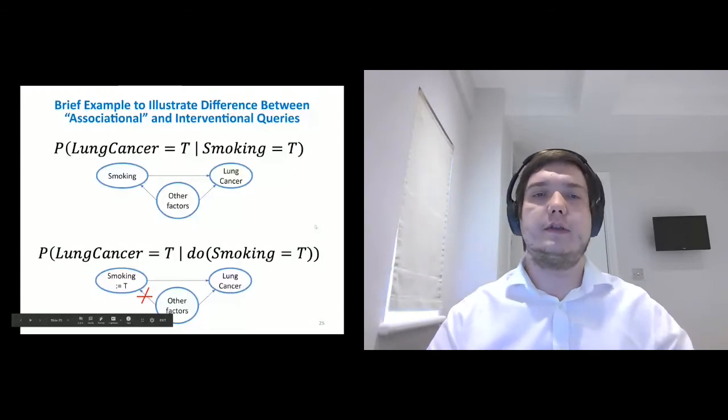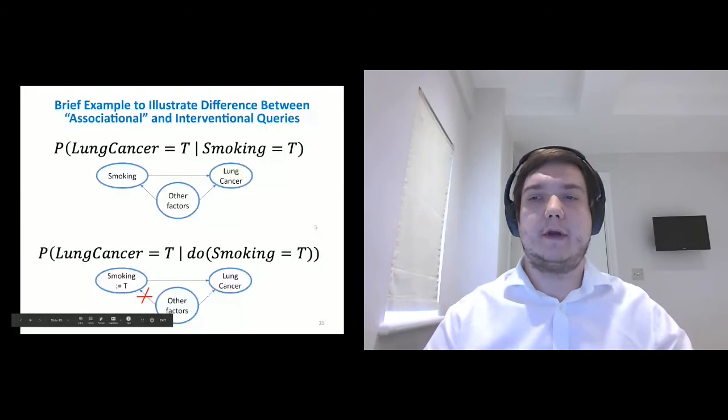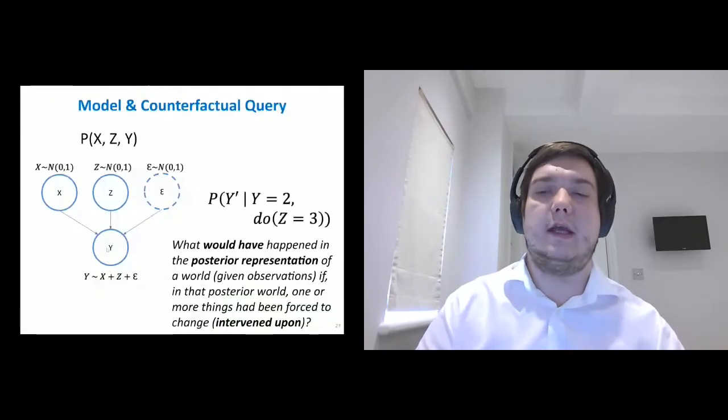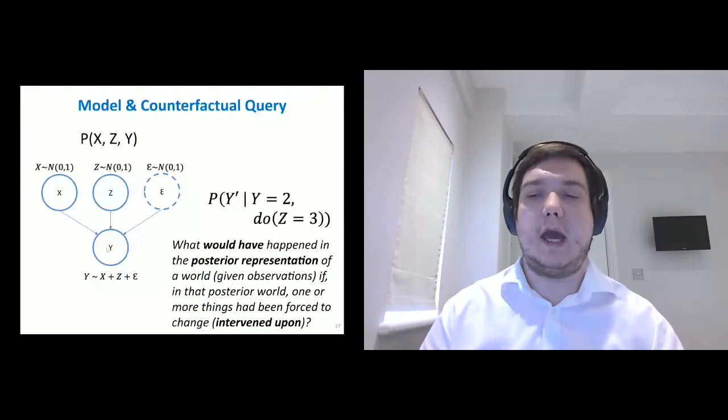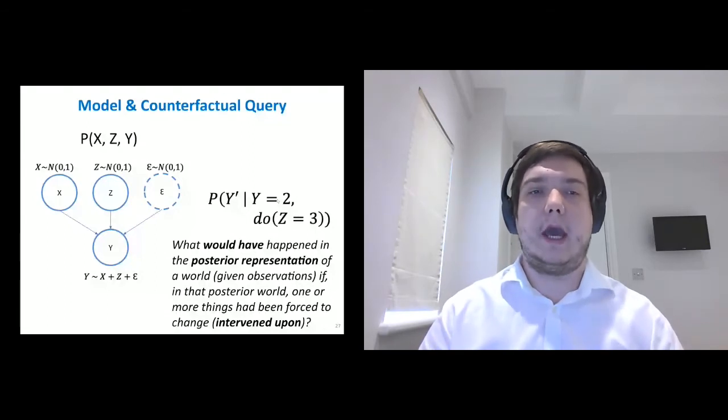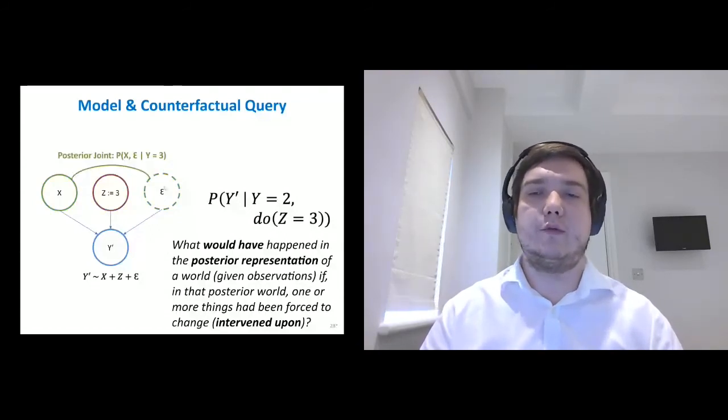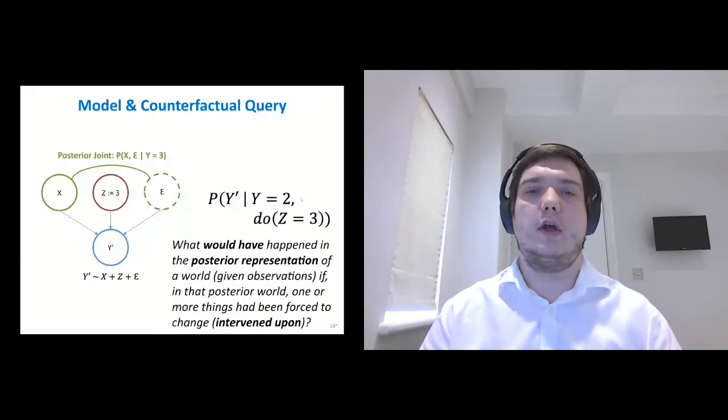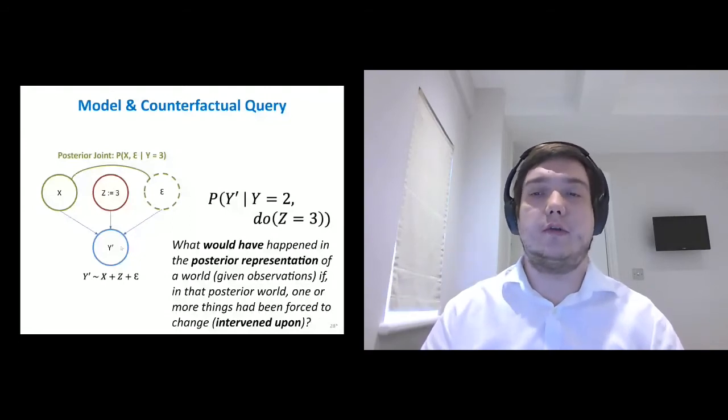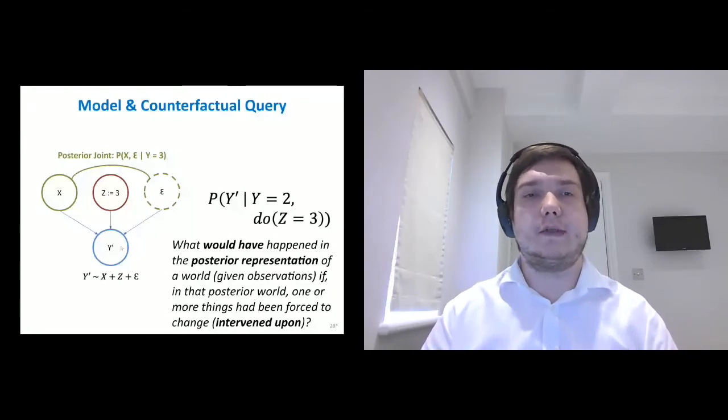And now for counterfactual queries, we have, for example, a query like this, where we're interested what's the probability of Y prime would have been if we have observation on Y equal to, and we had forced one, in this case Z to be equal to three, we intervene upon Z. And to calculate this counterfactual query, we need to do posterior inference over all nodes given evidence Y equal to, and then in the posterior new model with this observation, we need to intervene Z to be equal to three, and then we can predict Y prime, what's its value, and it's contradictory to the evidence that Y is equal to two. And there's a few examples of counterfactual queries.